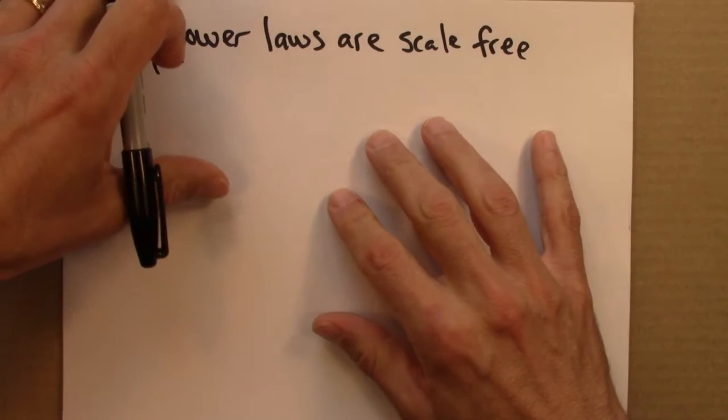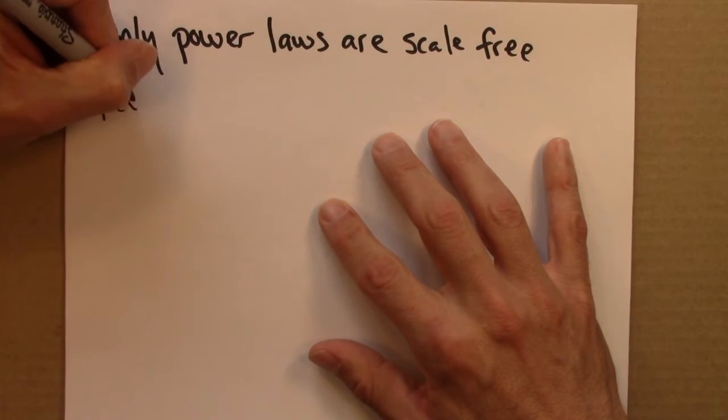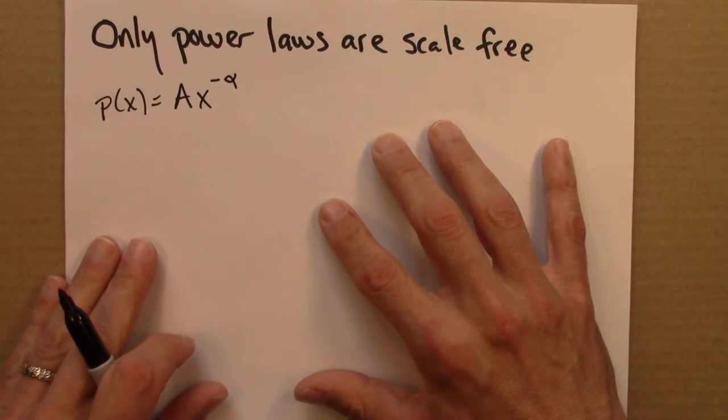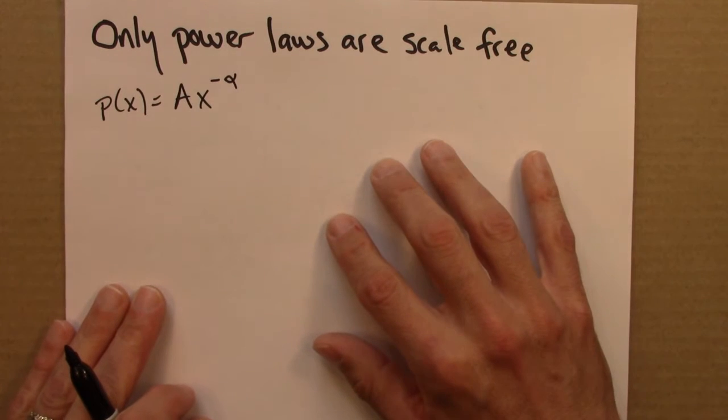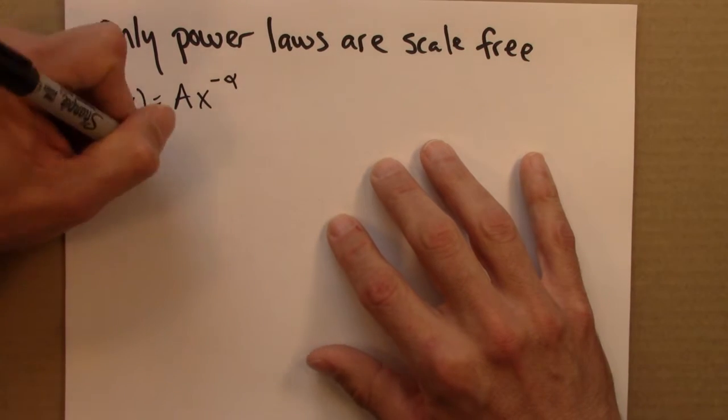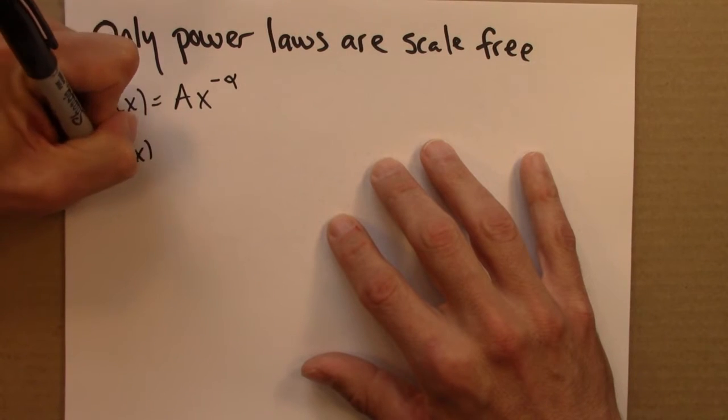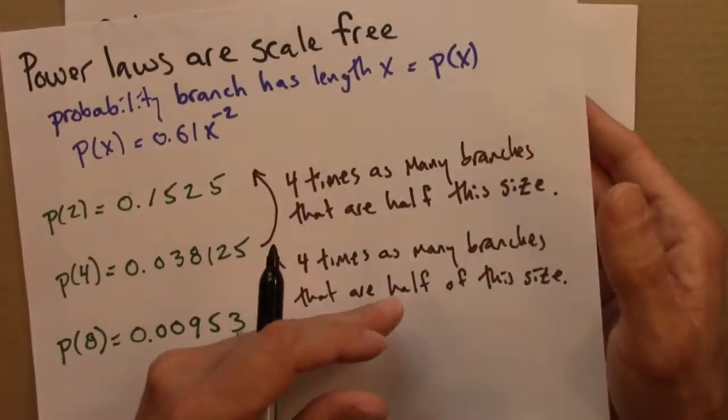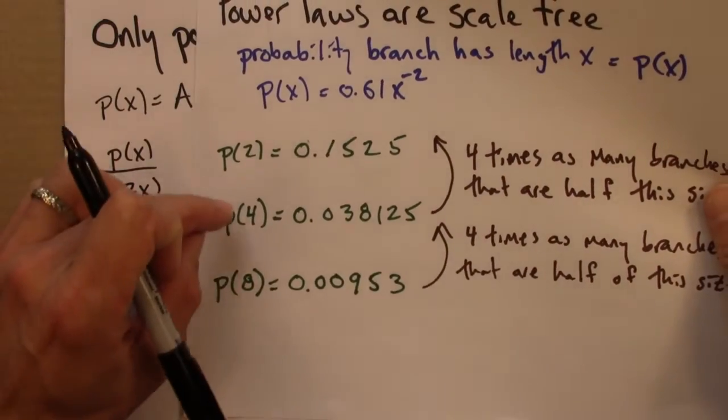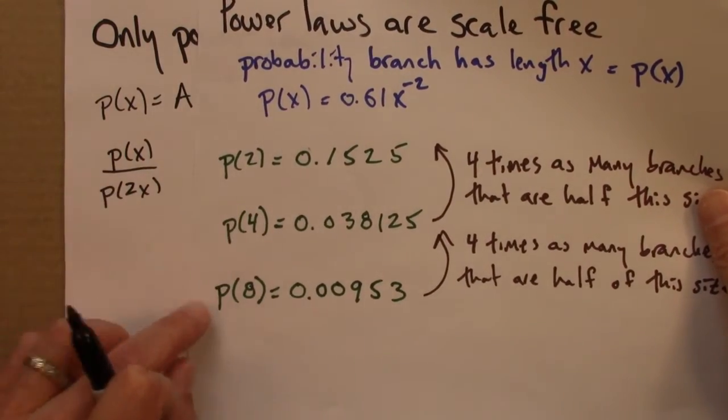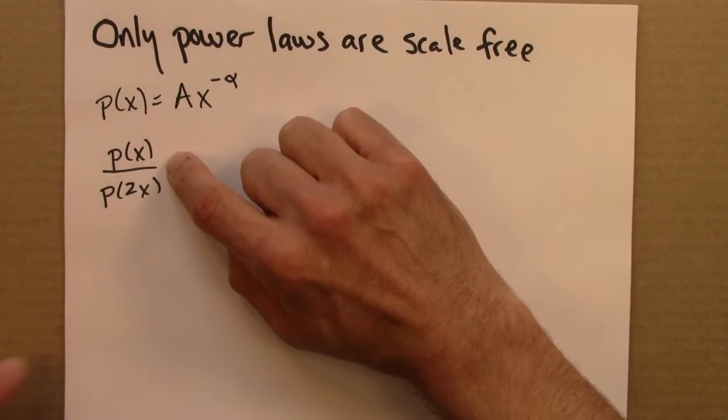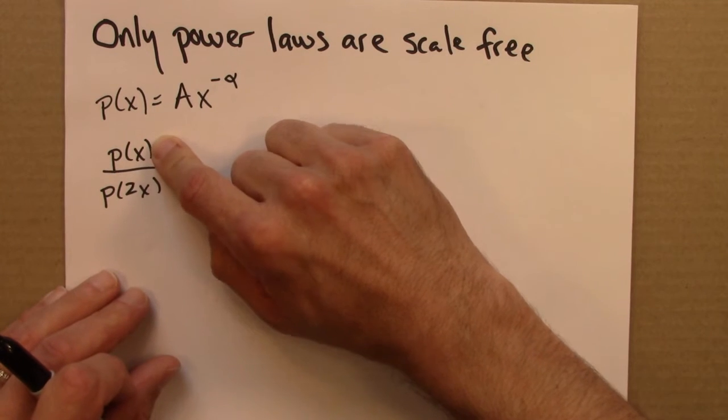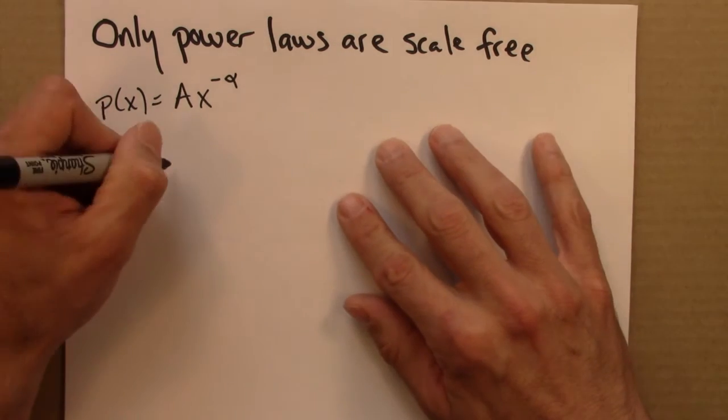So we're going to be working with power laws of this form, P of x, A x to the minus alpha. So let's say I was interested in P(x) over P(2x). I want P2 over P4, P4 over P8. This is just asking a little more generally, how much more common are things with length x than things of length 2x?